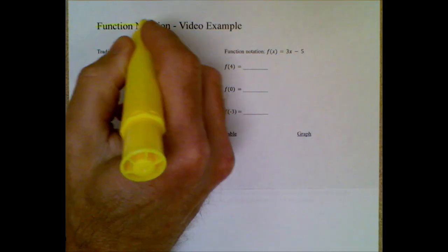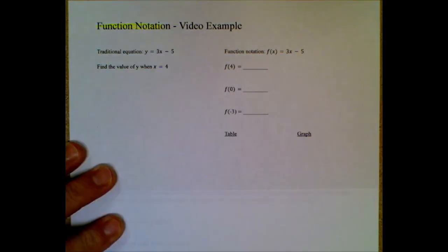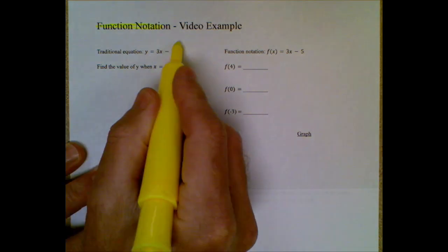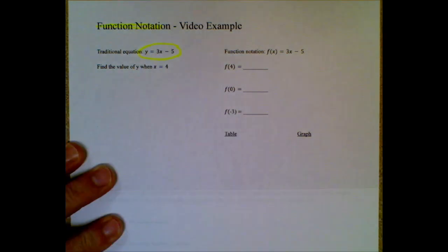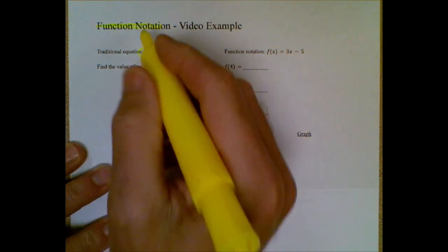Today we're going to find out about what's called function notation, which really means you're going to take something that you're already familiar with, a nice equation in slope-intercept form or any form you want, and you're going to change the symbolism slightly.